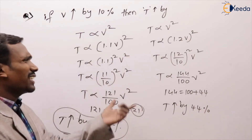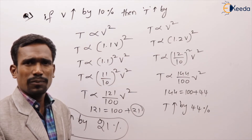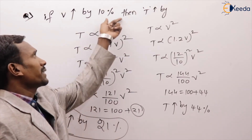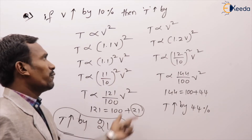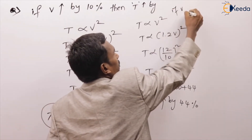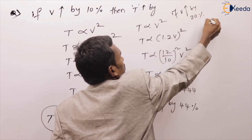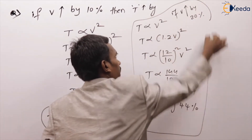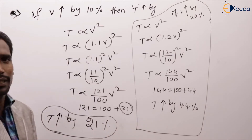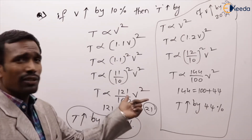Like that we can calculate for any values. If voltage increased by 10%, torque increases by 21%. If voltage increased by 20%, torque increases by 44%.